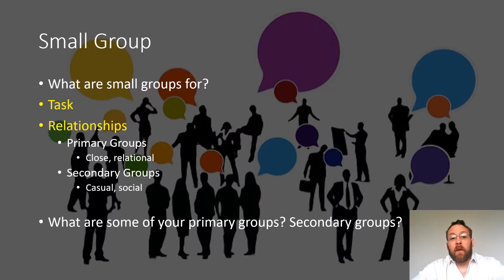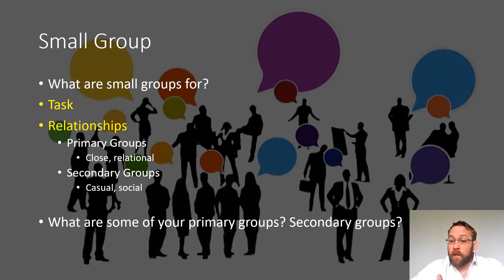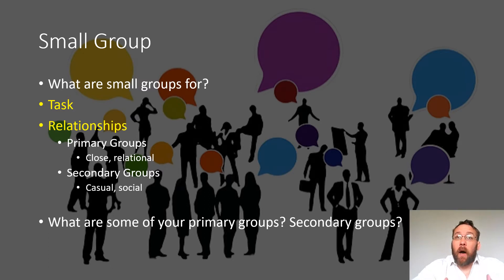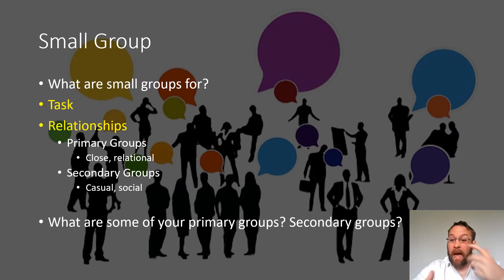So, small group communication — the first thing we need to understand is what small groups are for. Small groups function for two reasons. The first is task-oriented. For instance, a sports team comes together and their task is to win a championship, and possibly after the championship those relationships dissolve. At work, management might put you in a group to solve a problem or launch a new product, and once that's done the group dissolves and you get put into a different group for the next project.